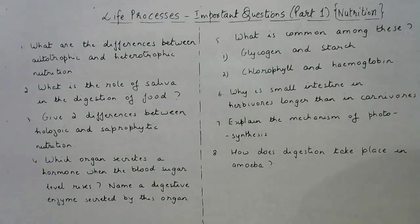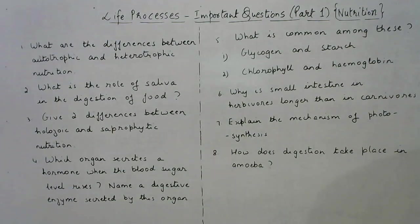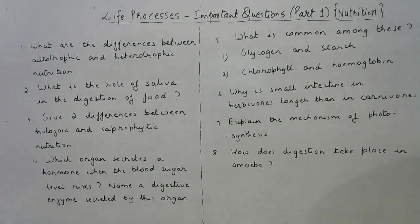Why is the small intestine in herbivores longer than in carnivores? Herbivores eat cellulose and are able to digest it. The digestion of cellulose takes a longer time compared to cooked food which is without cellulose. That is why the small intestine in herbivores is comparatively longer than in carnivores.